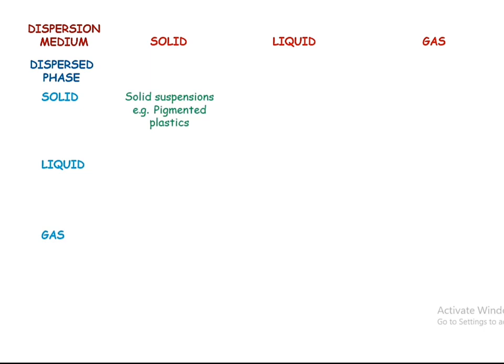When both the dispersed phase and dispersion medium are solid, solid suspensions are formed — for example, pigmented plastics. When the dispersion medium is solid and the dispersed phase is liquid, solid emulsions are formed — for example, cold creams. When the dispersed phase is gas and the dispersion medium is solid, solid foam is formed — for example, expanded polystyrene, which is a kind of plastic.